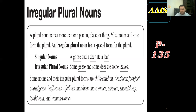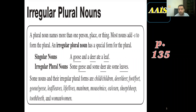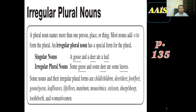In this box you have some more examples: 'child' becomes 'children.' 'Foot' becomes 'feet.' 'Goose' becomes 'geese,' and 'leaf' becomes 'leaves.' The word 'life' becomes 'lives.' Of course the most famous examples are 'man' becomes 'men' and 'woman' becomes 'women.' Also, 'mouse' becomes 'mice,' 'ox' becomes 'oxen,' 'sheep' stays 'sheep,' and 'tooth' becomes 'teeth.'